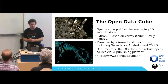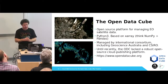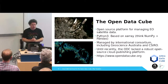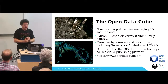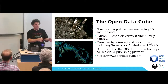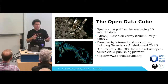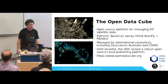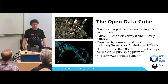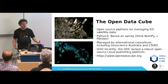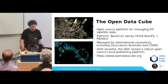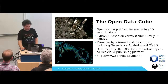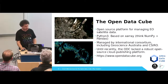We have the Open Data Cube — that's the starting point. As Alex explained, it's an open source platform for managing Earth observation data. It's built on XArray, which is like pandas for NumPy — it adds an extra metadata layer over the top of NumPy arrays. It's managed by an international consortium that includes Geoscience Australia and CSIRO, and we have outreach programs helping developing countries access and use their satellite data through the cube. Until recently, we lacked a robust open source cloud publishing platform, so we wanted to change that.